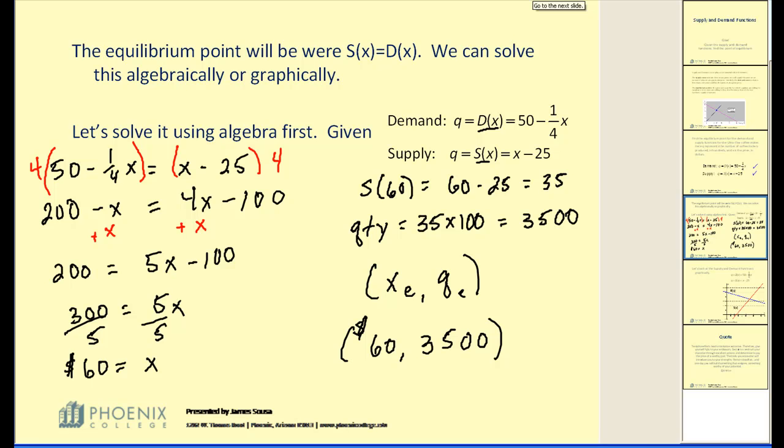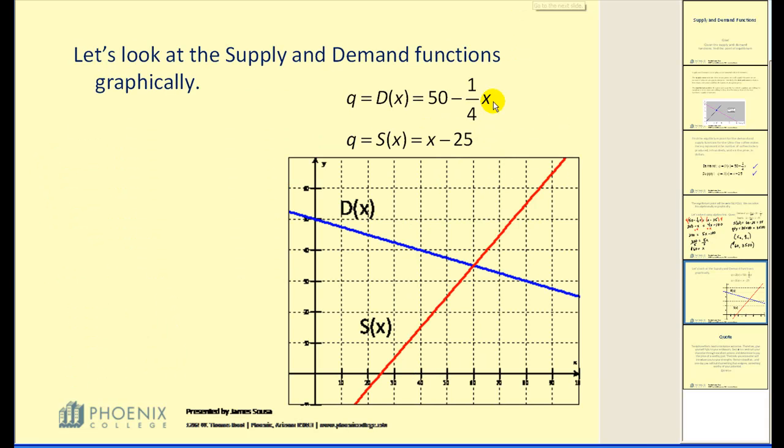Let's take a look at this same problem graphically. I've already graphed the demand function in blue and the supply function in red. This would be, graphically, the equilibrium point and it does verify our answer. Here, looks like the price would be $60 and the quantity on the Y axis would be 35.